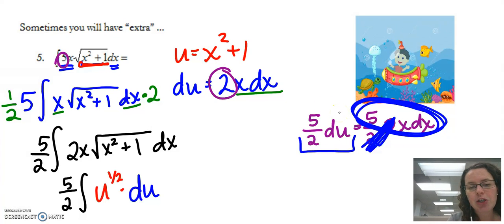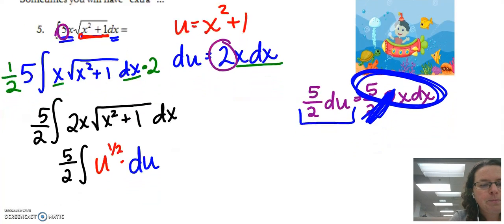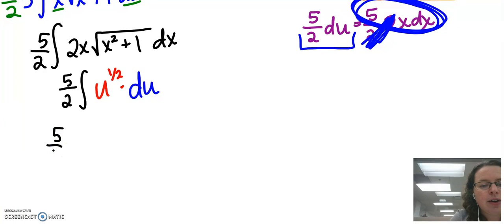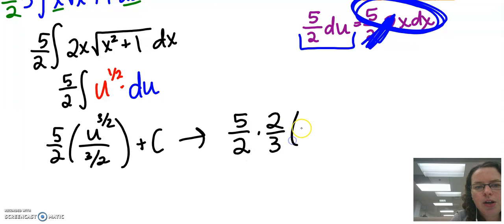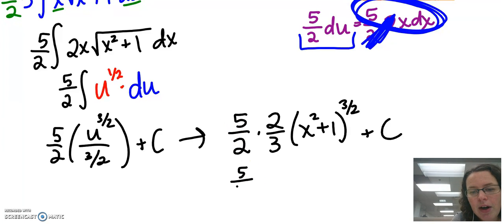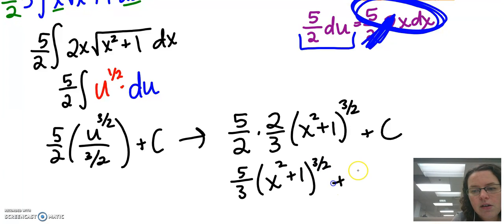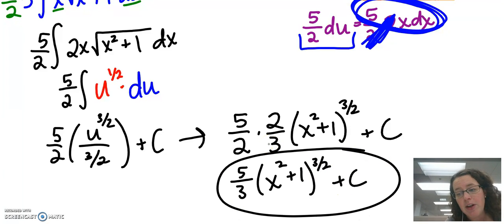Now integrate: (5/2) times u^(3/2) divided by (3/2) plus C. Back-substitute u = x²+1: (5/2)(2/3)(x²+1)^(3/2) plus C, which simplifies to (5/3)(x²+1)^(3/2) plus C. You could take the derivative to verify the result.